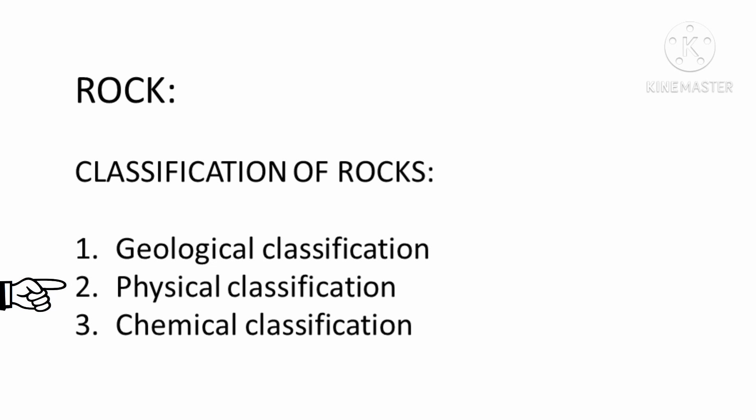Coming to the physical classification, this classification is based on the general structure of rocks. Physically, rocks are classified as stratified, unstratified, and foliated rocks. Coming to the chemical classification, it is mainly based on the chemical composition of rocks. According to this classification, rocks are classified into siliceous, argillaceous, and calcareous rocks.